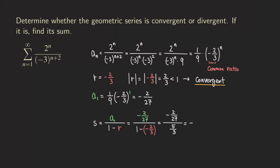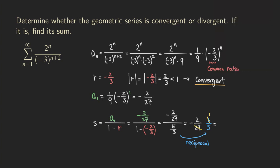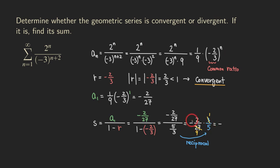We don't want to do division, so we are going to turn this into multiplication, which is really just multiplying by the reciprocal of the denominator. The reciprocal is 3 over 5. So now we can simplify — the 3 becomes a 1, the 27 becomes a 9, when you divide top and bottom by 3. So our final answer would be negative 2 over 9 times 5, which is 45. So you are going to be getting negative 2 over 45. That's our sum.